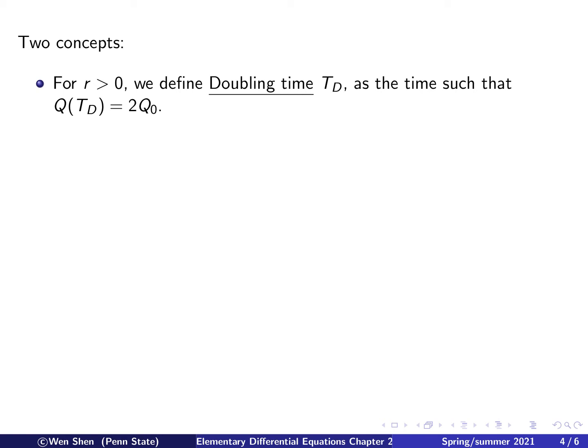Here, I would like to introduce two concepts. So first, for the case where r is bigger than 0 and we have exponential growth, for the solution there, we define a concept called the doubling time. We call it capital T sub D. And this is the time such that the quantity doubles itself. So Q at TD would equal to two times Q0, which is at t0.